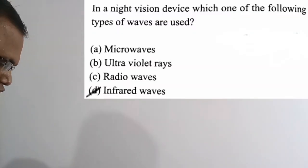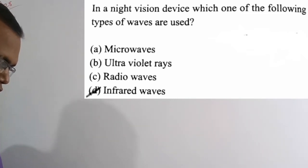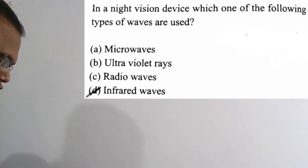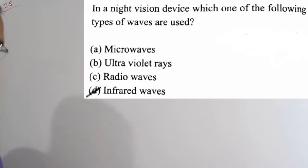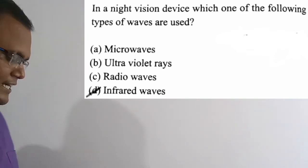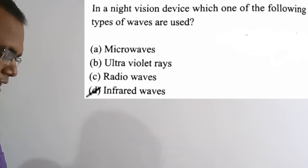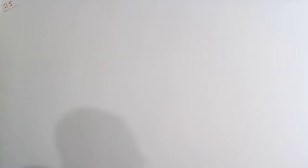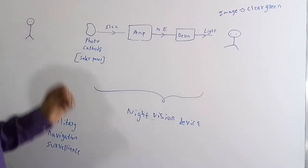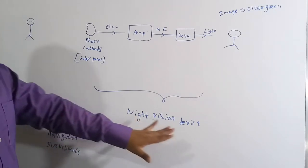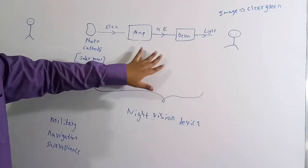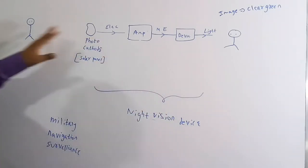Now we are going to solve the 28th question: In a night vision device, which type of waves are used? Option A microwaves, option B ultraviolet rays, option C radio waves, option D infrared rays. Option D, infrared rays, are used in night vision devices. Let's discuss some important facts.